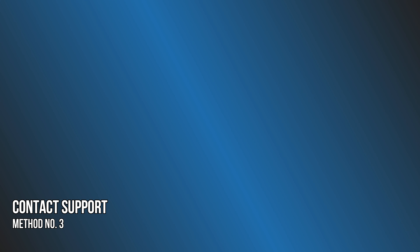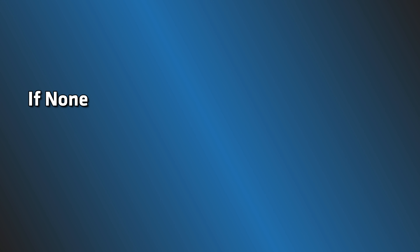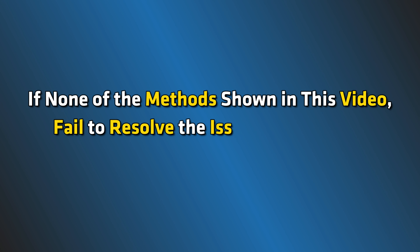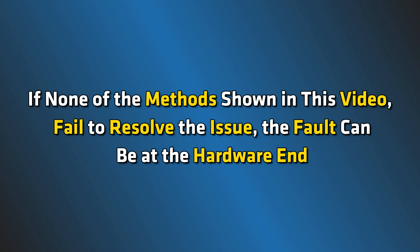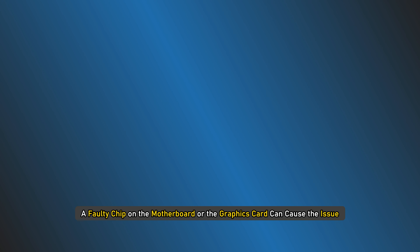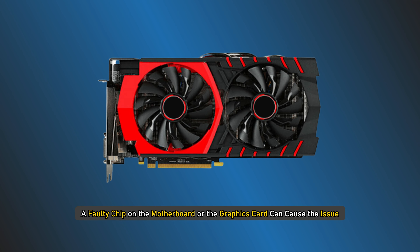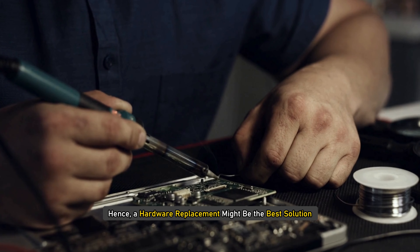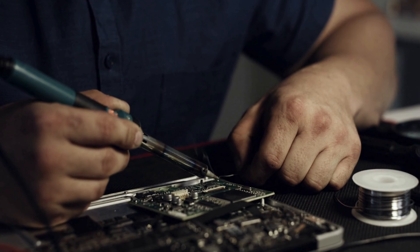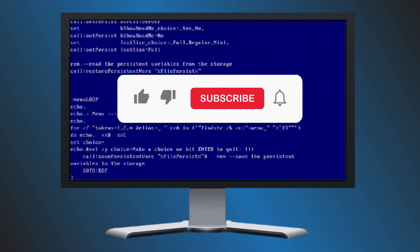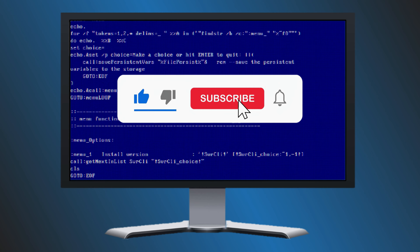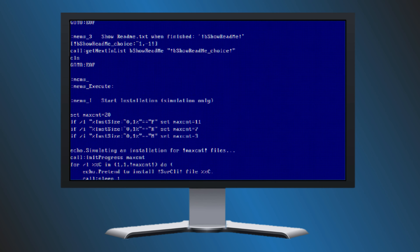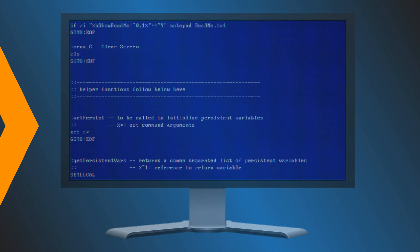Method 3: Contact Support. If none of the methods shown in this video resolve the issue, the fault can be at the hardware end. A faulty chip on the motherboard or the graphics card can cause the issue. Hence, a hardware replacement might be the best solution. Subscribe to the Windows Club for all your tech solutions related to Windows. Thanks for watching.